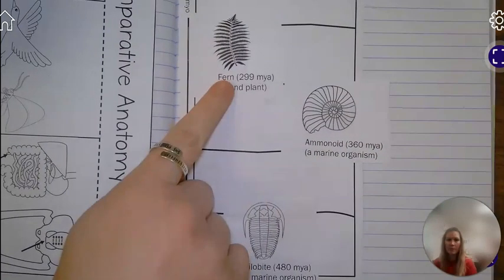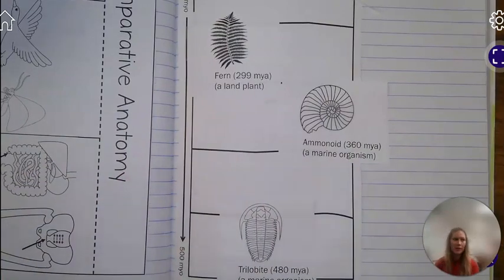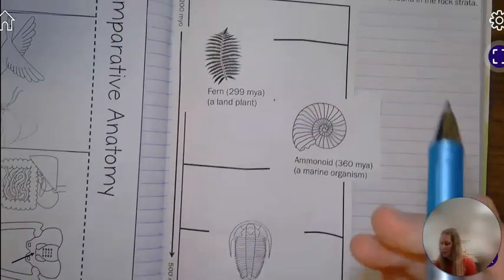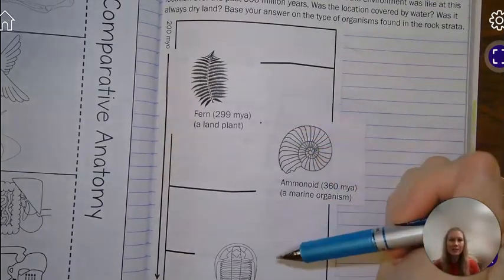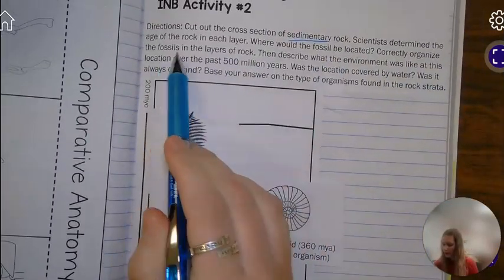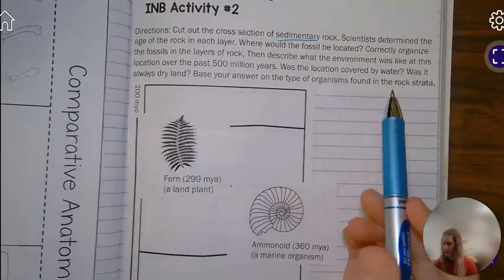I've got my fern up here at the top, then my ammonoid, and then my trilobite all the way down at the bottom. So now that I have organized my fossils in the layers of rock, I need to describe what the environment was like.